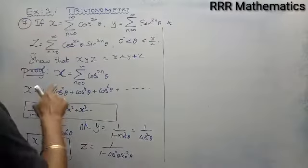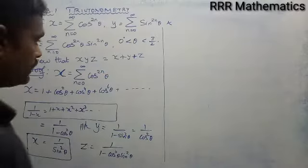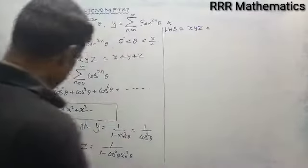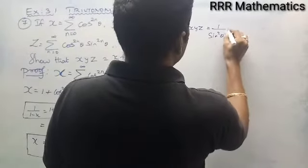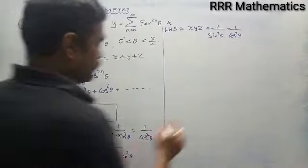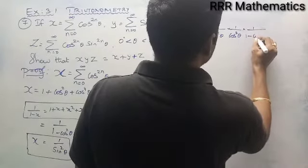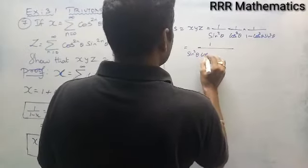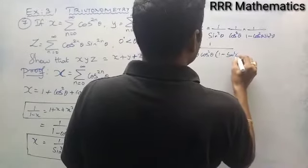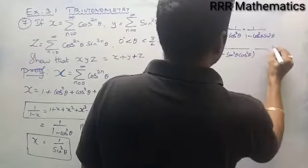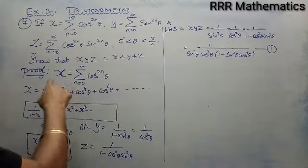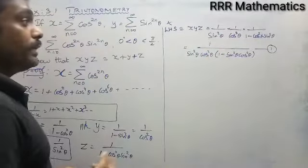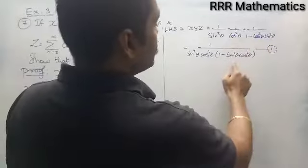I want to prove the product x into y into z equals the sum x plus y plus z. For the left hand side, x into y into z: x is 1 by sin square theta, y is 1 by cos square theta, and z is 1 by 1 minus cos square theta into sin square theta. Multiplying 1 into 1 into 1 gives 1 in the numerator. The denominator is sin square theta into cos square theta into 1 minus sin square theta into cos square theta.